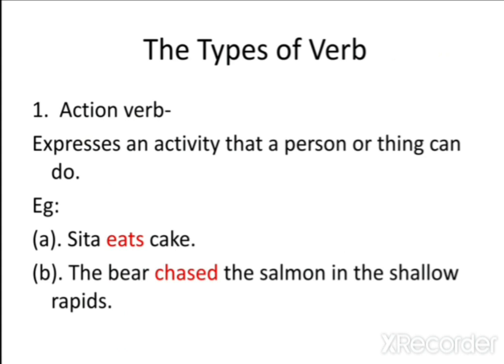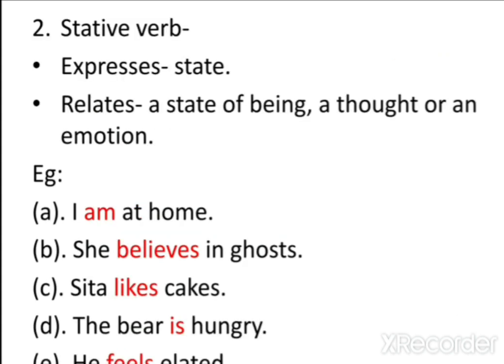Now the types of verb. Number one: action verb. An action verb expresses an activity that a person or thing can do. For example, 'Sita eats cakes' — eating is something Sita can do. 'The bear chased the salmon in the shallow rapids' — chasing is something the bear can do. So 'eats' and 'chased' are action verbs as they express an activity being done.